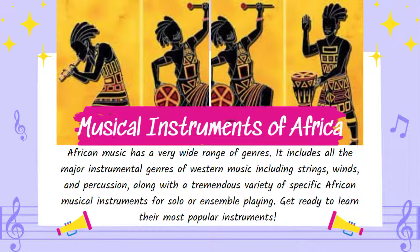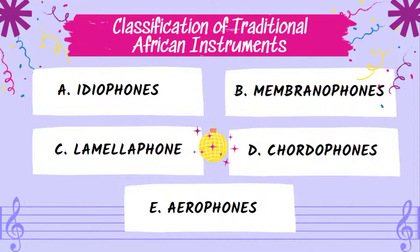Africans also have musical instruments. African music includes all major instrumental genres of Western music including strings, winds, and percussion, along with a tremendous variety of specific African instruments for solo or ensemble playing. There are five classifications of traditional African instruments: idiophones, membranophones, lamellophone, chordophones, and aerophones.